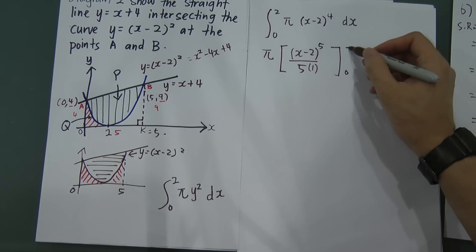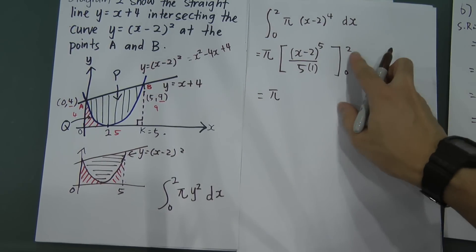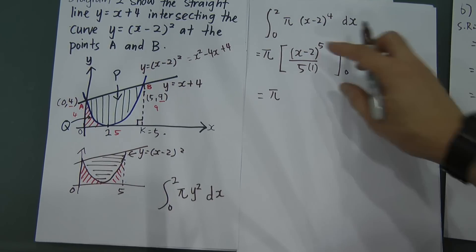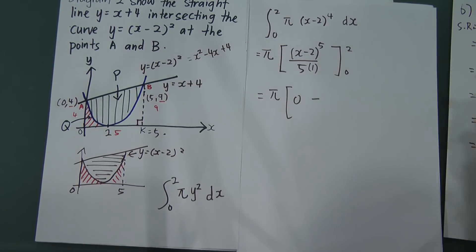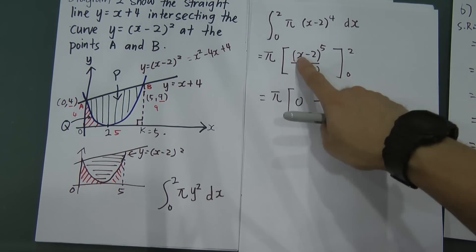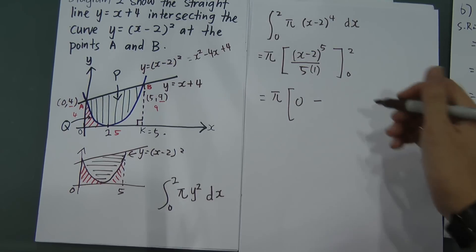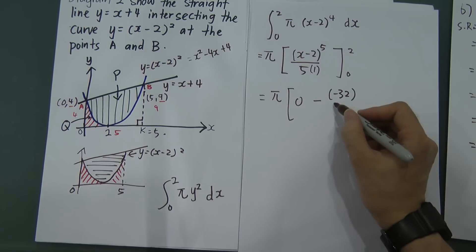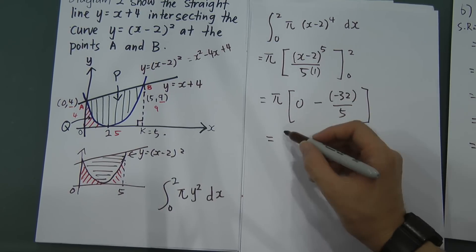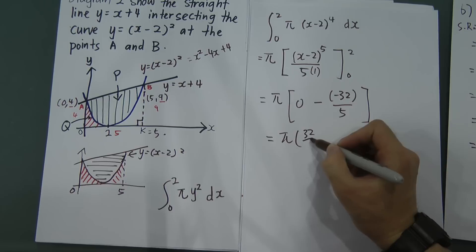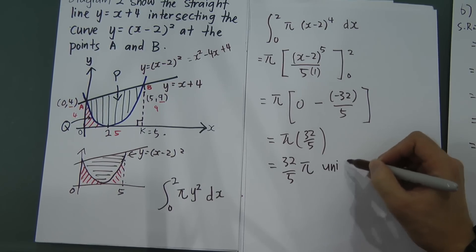Therefore, we get pi times: substituting 2 gives 2 minus 2 equal to 0, and 0 to the power of 5 is 0. Minus substituting 0 gives 0 minus 2 equal to negative 2, negative 2 to the power of 5 is negative 32, divided by 5. So 0 minus negative 32 over 5 gives positive 32 over 5. Therefore the answer is 32 over 5 times pi, unit cubed.